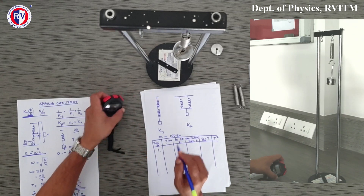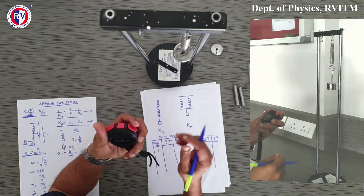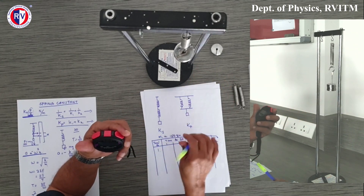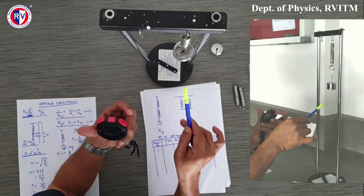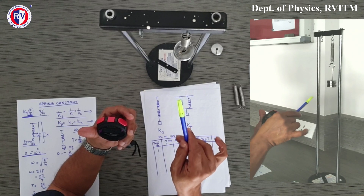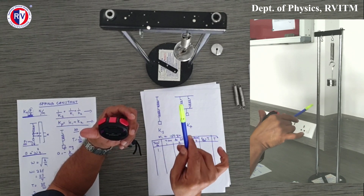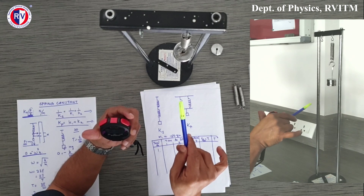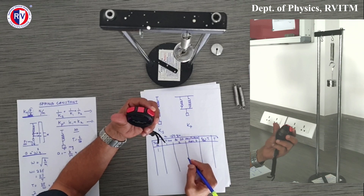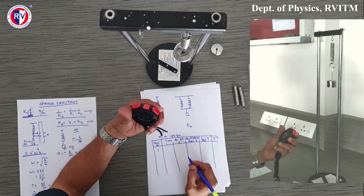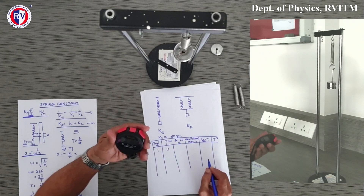Now let the body oscillate. I refer to the bottom point of the mass. When it comes down I start counting: 1, 2, 3 ... up to 20. I am getting 10.84 seconds — I will write it as 11 seconds. For the second trial, again counting 20 oscillations from when it comes down, I get nearly 10 seconds. Taking the mean: (11 + 10) / 2 = 10.5 seconds.